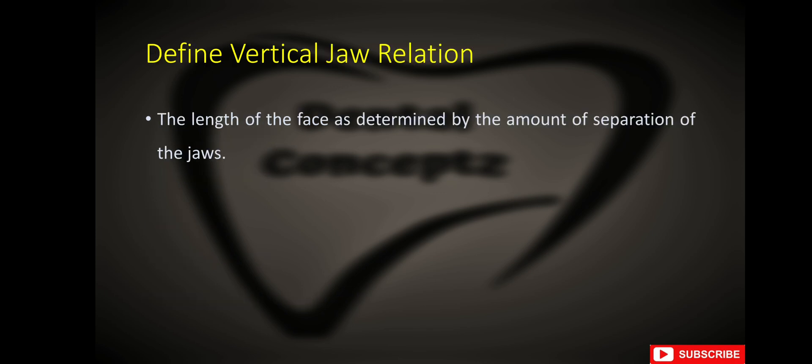What is vertical jaw relation? Vertical jaw relation is the length of the face as determined by the amount of separation of the jaws.